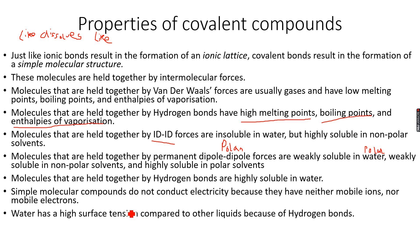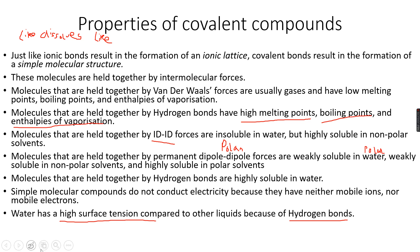Water has a high surface tension compared to other liquids because of hydrogen bonds. Surface tension is basically the upward force you experience when you try to put something inside water. Whenever you try to push something into water, you feel a push on your hands, and that push is applied by hydrogen bonds. That push is called surface tension, so water has a high surface tension.